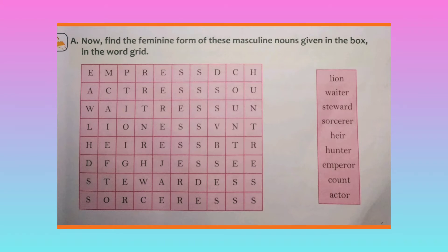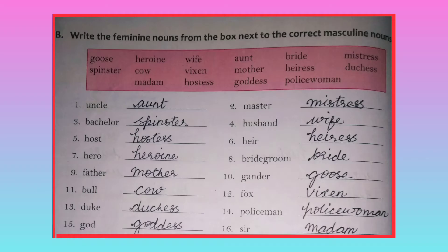Let's move to the first exercise. You can see most of the feminine nouns are formed by adding '-ess' or '-ess' to the masculine form. So you have to find out the feminine form of these masculine nouns given in the box. In the word beat, you have to circle that one.